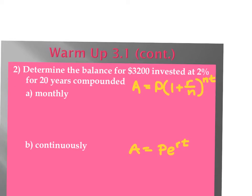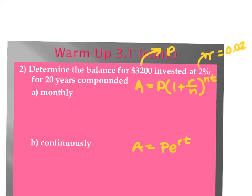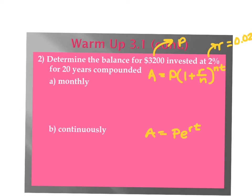For part A, $3,200 is my principal balance, that's my P. 2% is the rate, and we're going to convert that into decimal — move your decimal two places, so 0.02. And then 20 years compounded, 20 is my T for time. For A being monthly, the other variable we have to worry about is N, and N is the number of times per year. So if it's monthly, then N is 12.